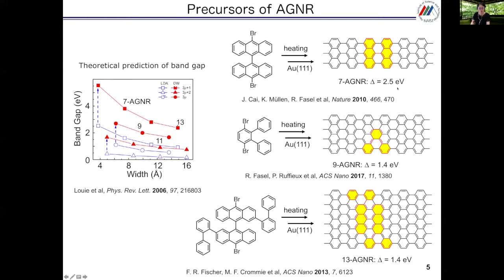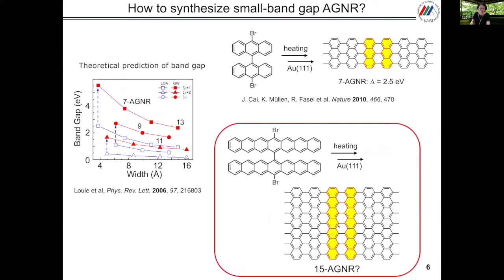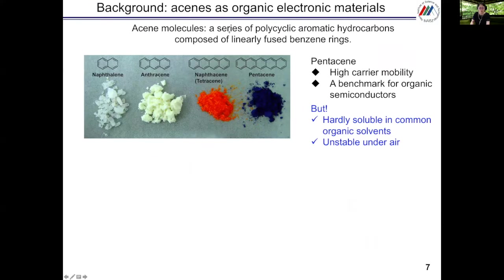These are the experimentally obtained graphene nanoribbon bandgap energies: for 7-AGNR, 2.5 eV; for 9-AGNR, 1.4 eV; and for 13-AGNR, 1.4 eV. At first, we simply thought that by making the heptacene dimer, maybe we can make the 15-AGNR.